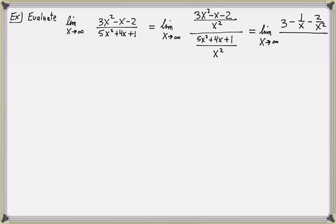Similarly, in the denominator, 5x squared divided by x squared is 5, 4x divided by x squared is positive 4 over x when I cancel a common factor of x, and then I get a plus 1 over x squared.